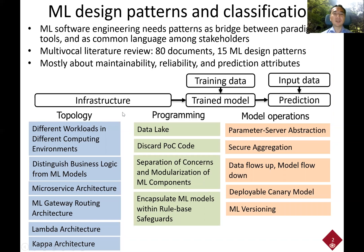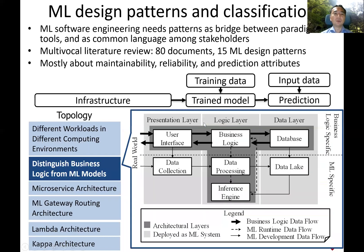Topology patterns address mostly the design of infrastructure, while programming patterns address both infrastructure and models. Model operation patterns focus on models. For example, one topology machine learning pattern is to distinguish business logic from machine learning models. In successful design of ML-based software systems, it is better to separate business logic from machine learning models to improve maintainability. The recommended structure includes a presentation layer, logic layer, data layer, business logic-specific components, and machine learning-specific components.